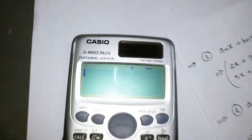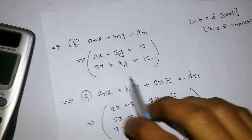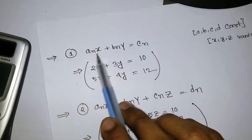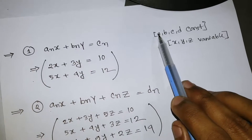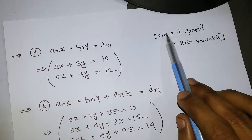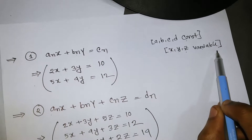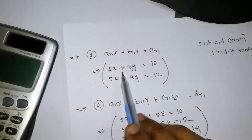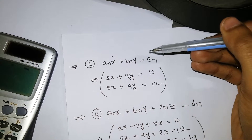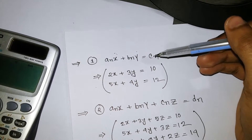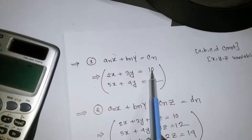Today I'm going to demonstrate it on this particular calculator. We know that there are basically four types of equations. The first one is aX plus bY equals c — here a, b, and c are constants, and X, Y, Z are variables. Remember that we have one and two variable equations, meaning we need two equations to solve for two unknowns.